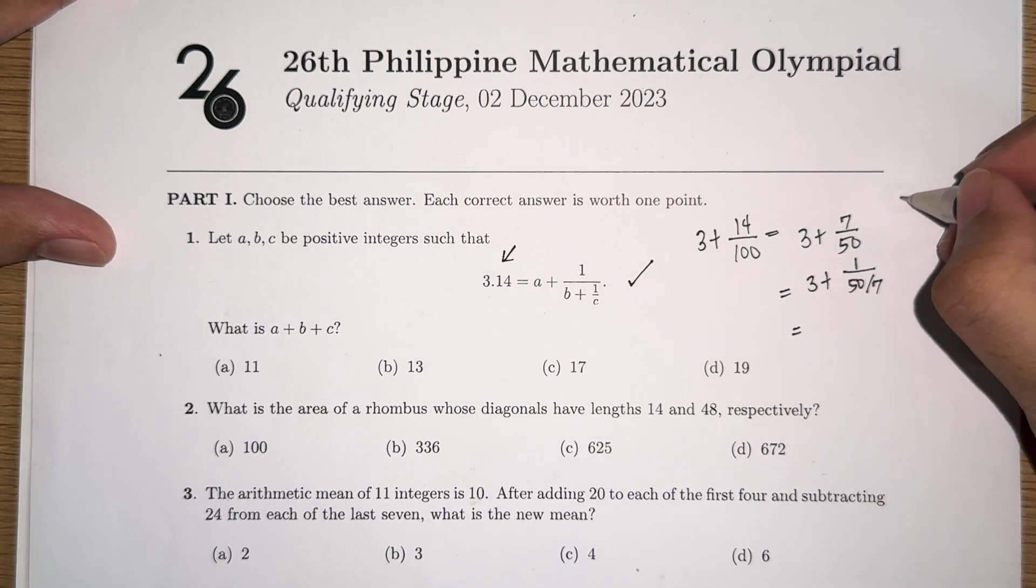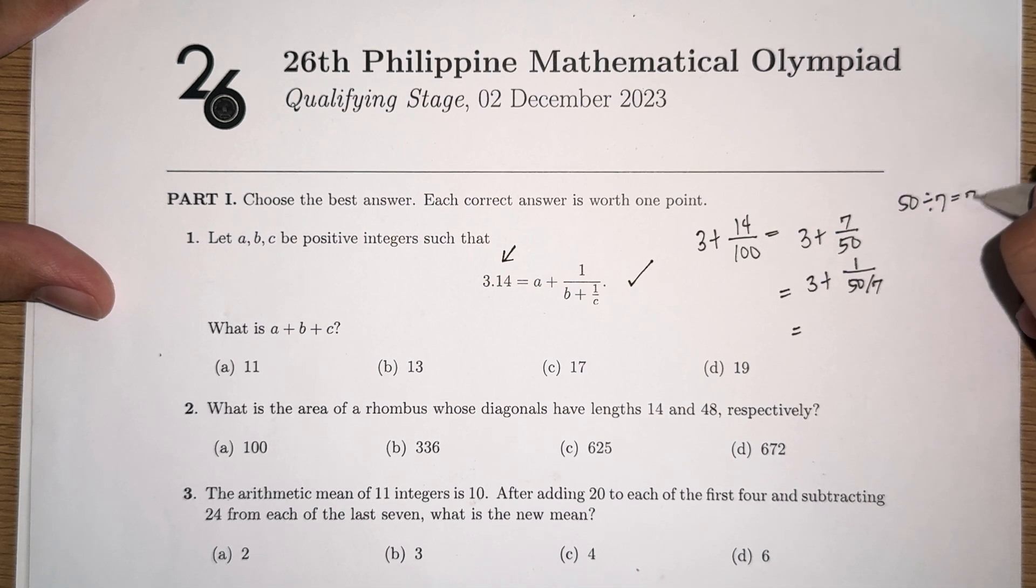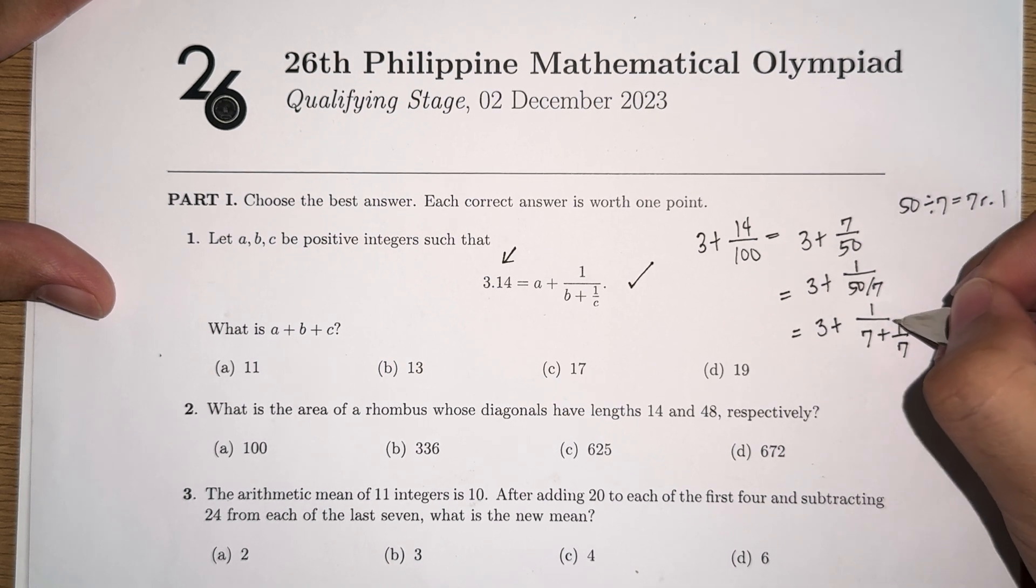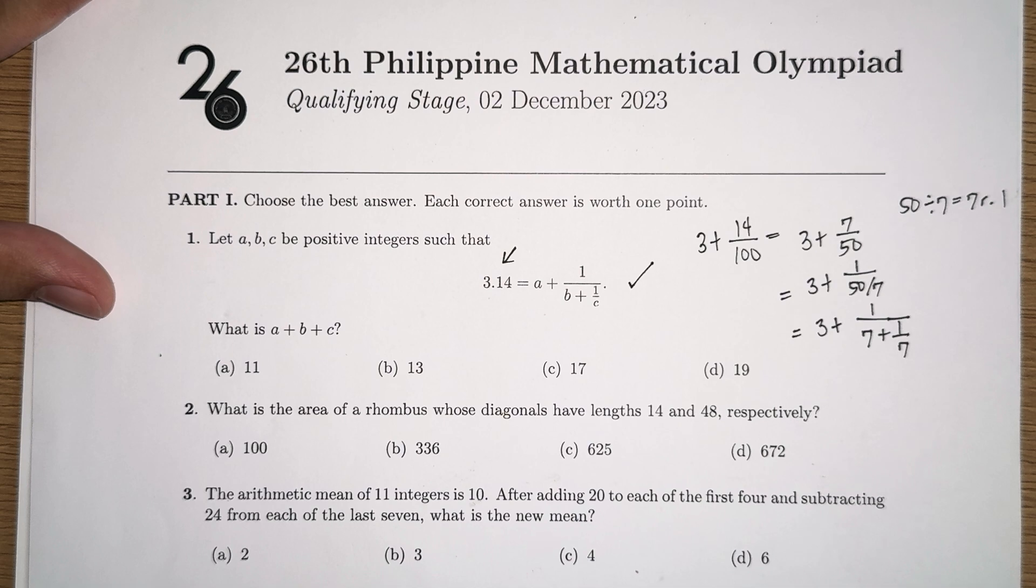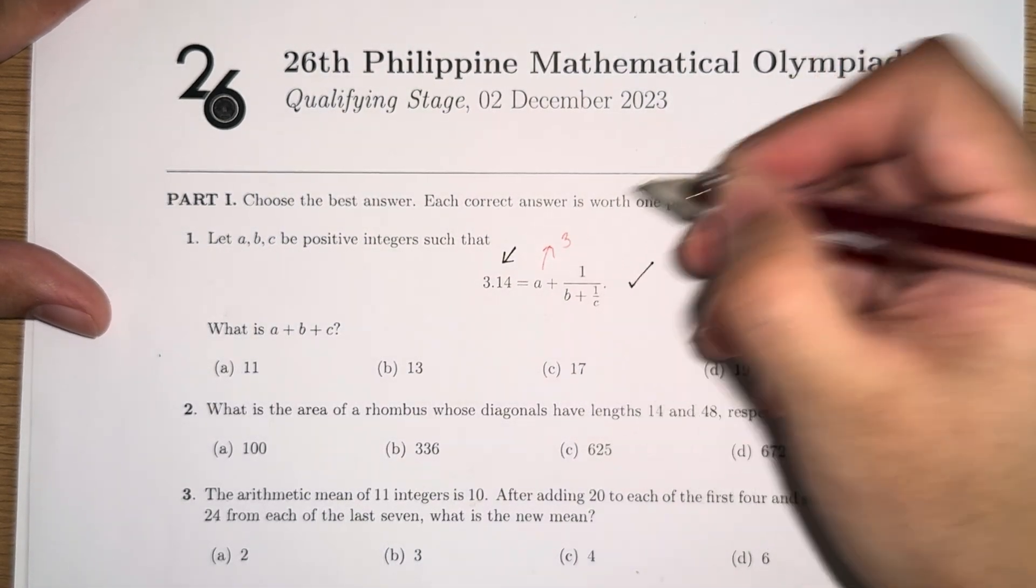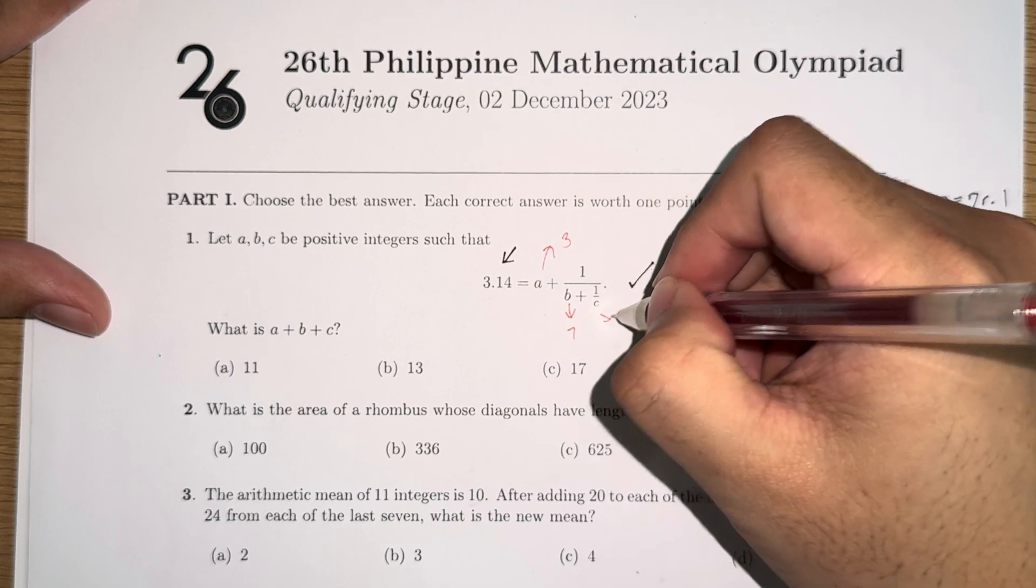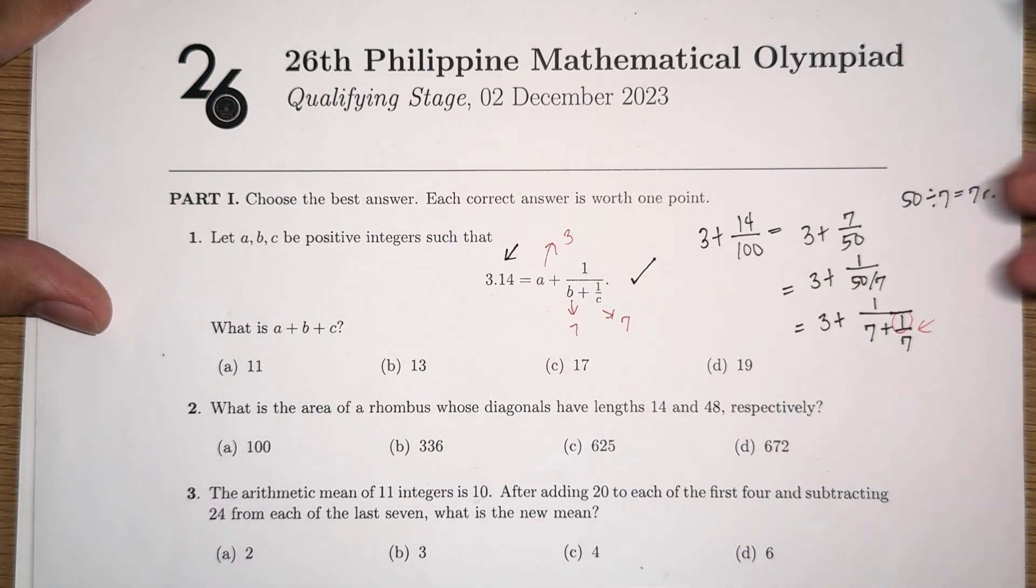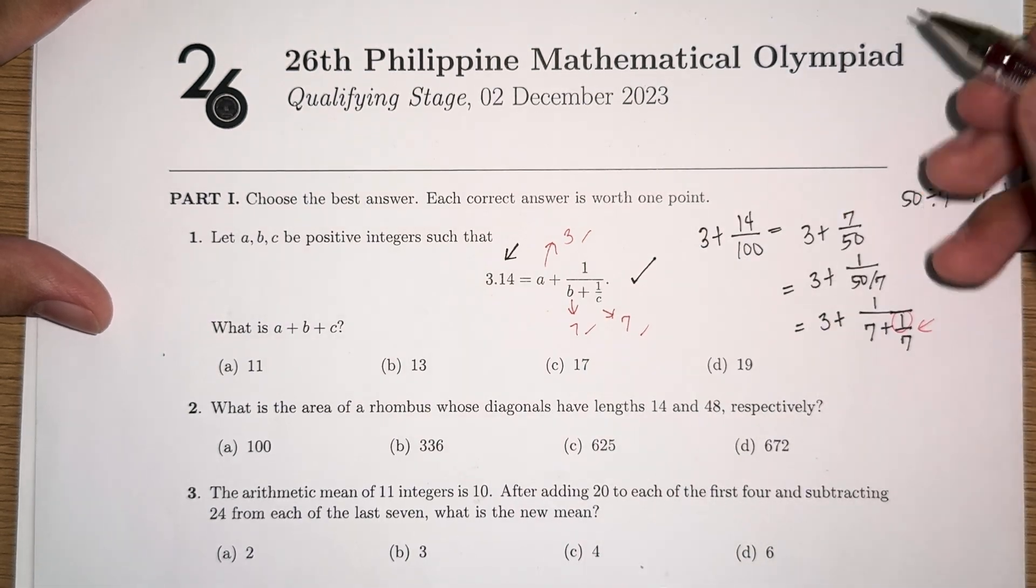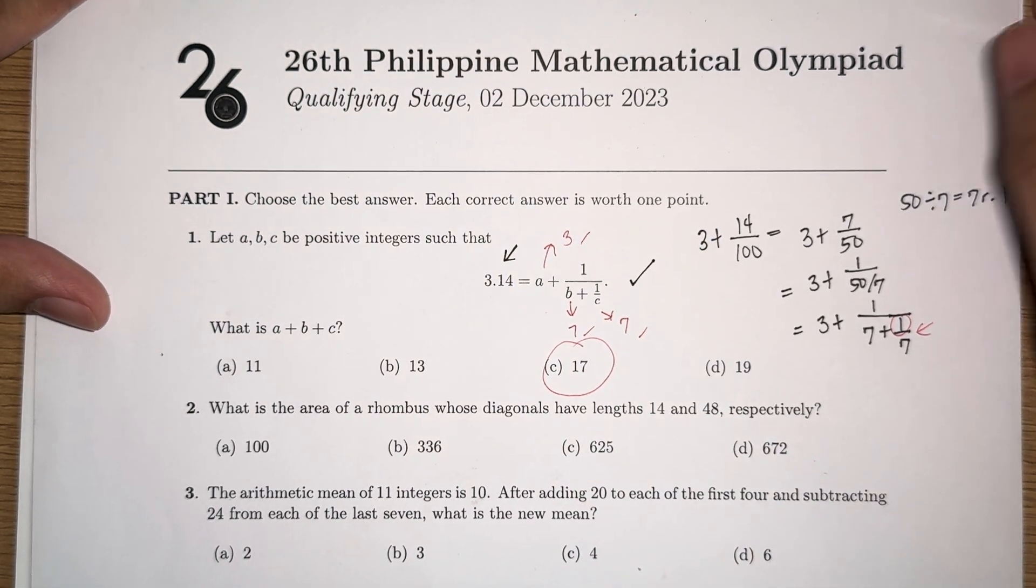And then we rewrite 50 over 7 as a mixed number. We can do that by dividing 50 by 7, so that's 7 remainder 1. So we can write this as 3 plus 1 over 7 plus 1 over 7. Since the last term here already has a numerator of 1, we're done, and we are able to find the values of a, b, and c. a equals 3, b equals 7, and c equals 7. Therefore, the value of a plus b plus c is 3 plus 7 plus 7, which is 17.